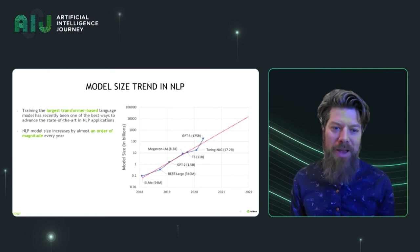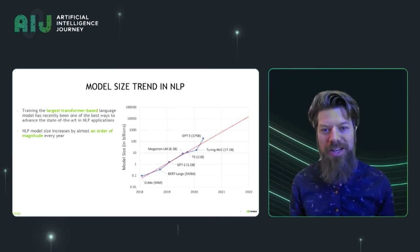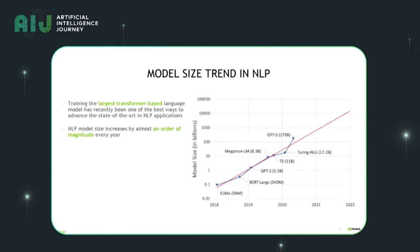And recently, over the past few years, there has been a revolution in natural language processing based on large transformer models. And the whole world has found that these models are one of the best ways to advance the state-of-the-art in NLP applications. We've seen a really astonishing rate of growth where the size of these models is increasing by almost an order of magnitude every year.